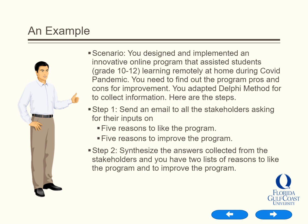Step 1: Send an email to all the stakeholders asking for their inputs — 5 reasons to like the program and 5 reasons to improve the program. Step 2: Synthesize the answers collected from the stakeholders, producing two lists of reasons to like the program and to improve the program.